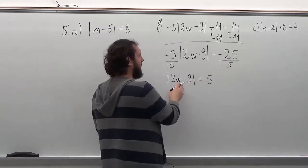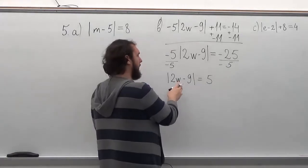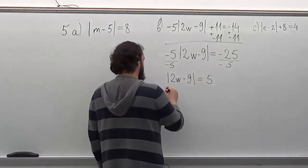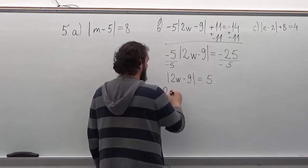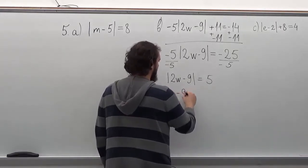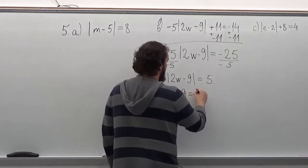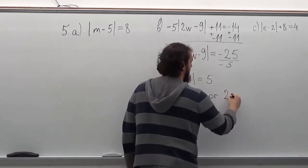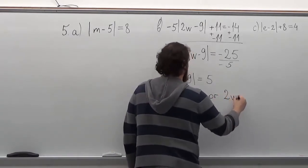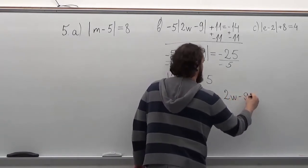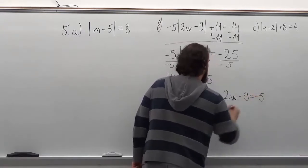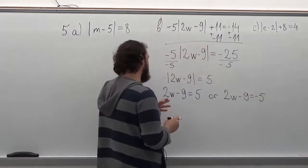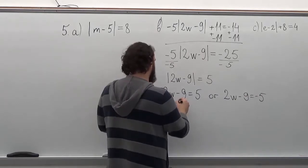So remember, whatever is inside the absolute value brackets can be either a positive or a negative. So we write it out in two parts. To solve this, first we must add a 9 to both sides.